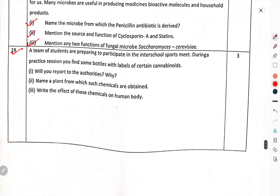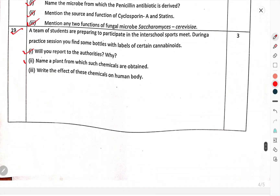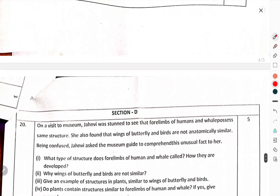Question 19 — A team of students are preparing to participate in an inter-school sports meet. During a practice session, you find some bottles labelled with certain cannabinoids. Which will you report to the authorities and why? Name a plant from which such chemicals are obtained. Write the effects of these chemicals on the human body.